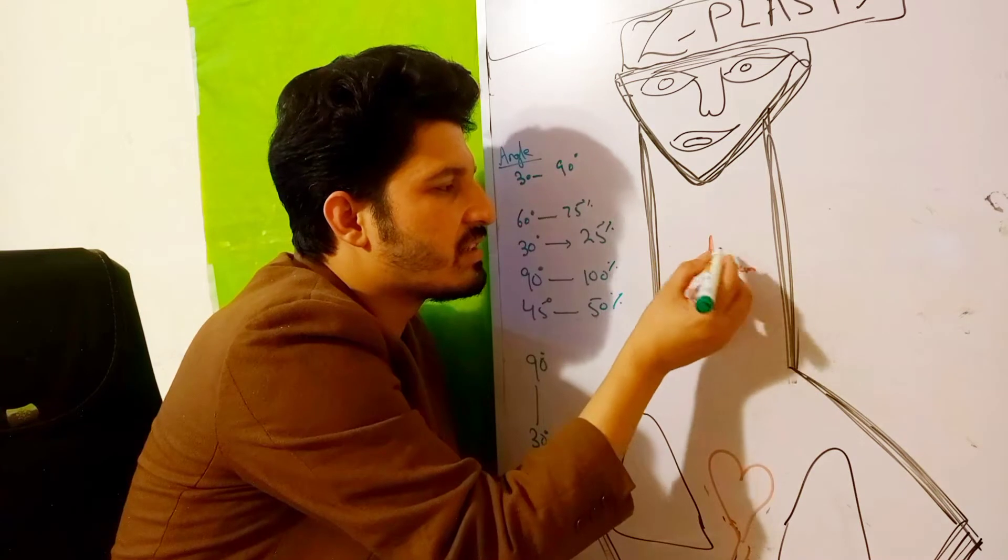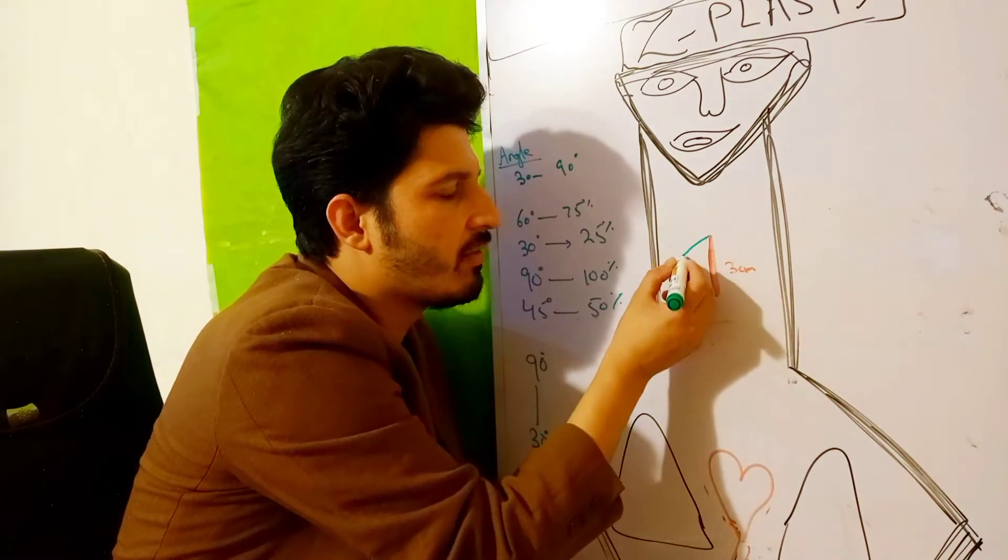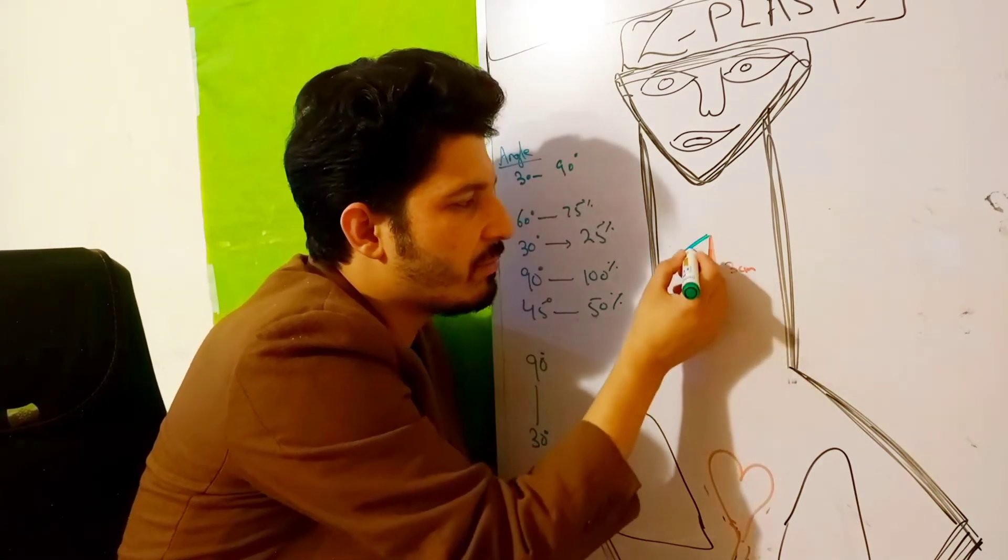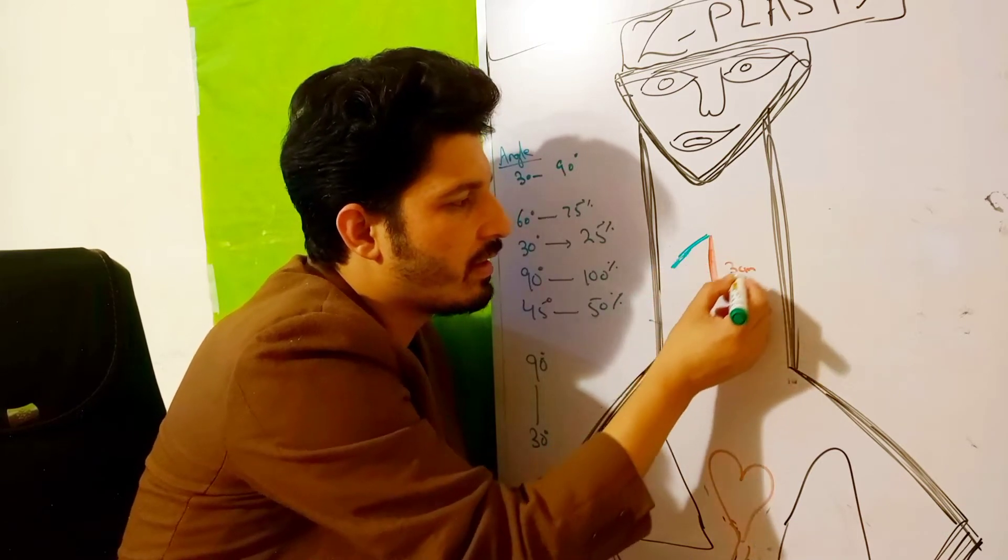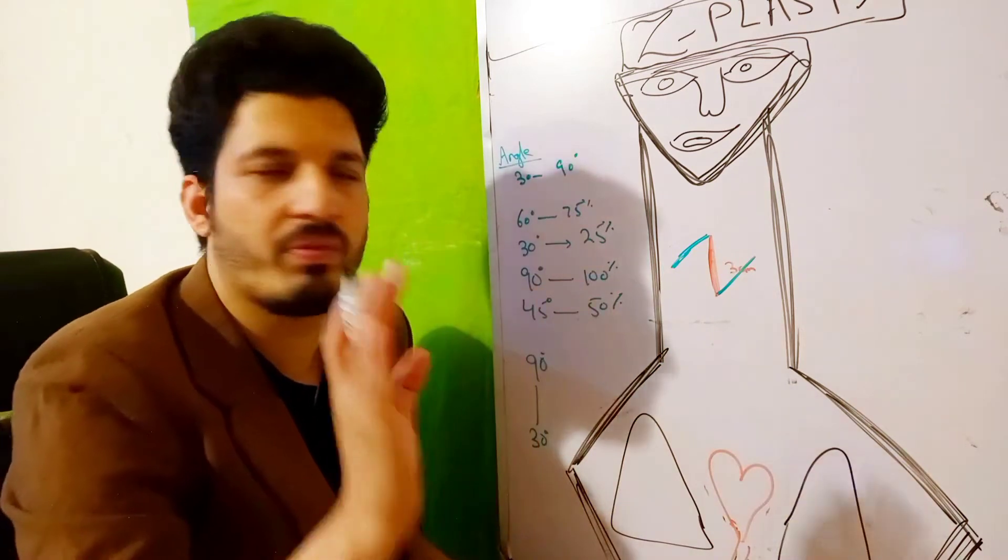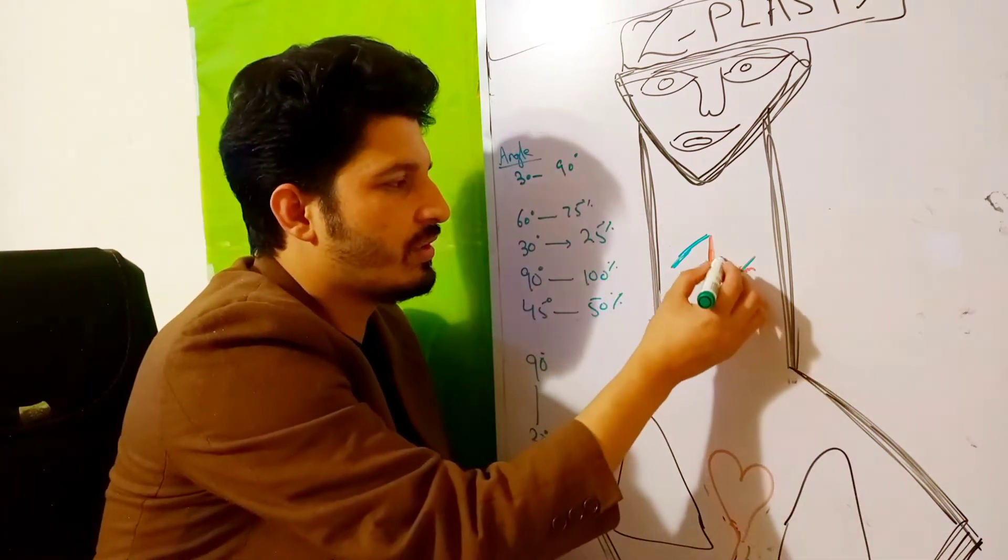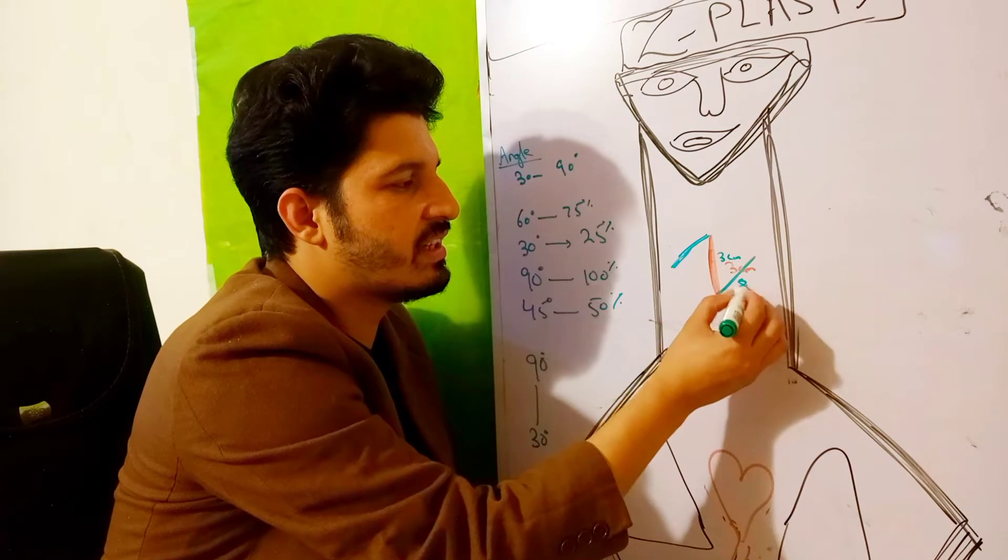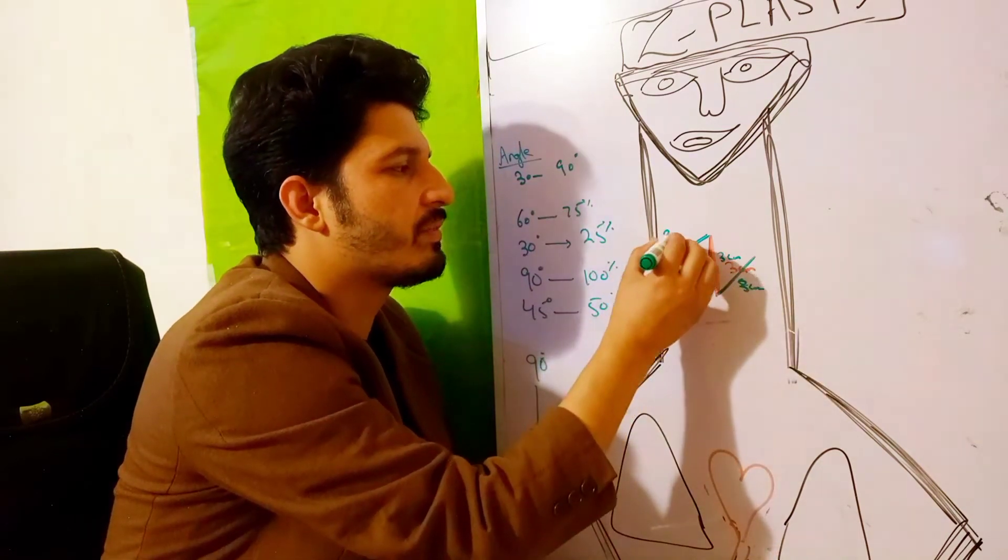We will make the Z-plasty: one limb here, another limb here, and all three limbs will be of equal length. So if it is 3 centimeters, it is also 3 centimeters, and again this should also be 3 centimeters.